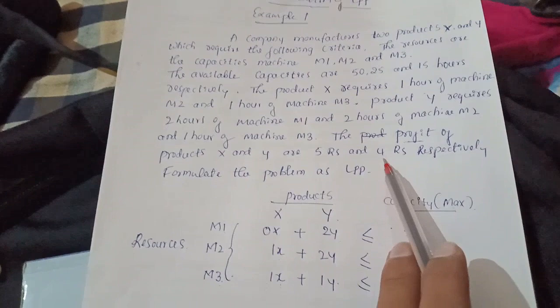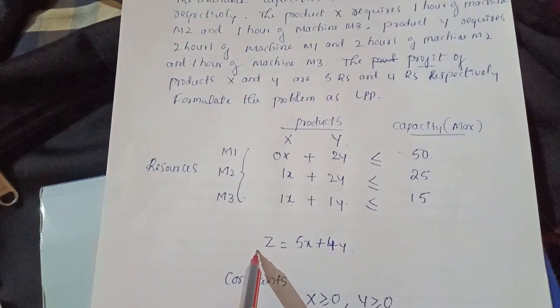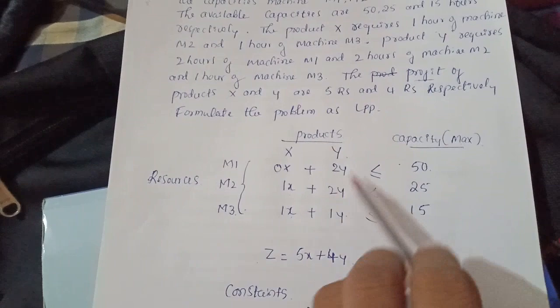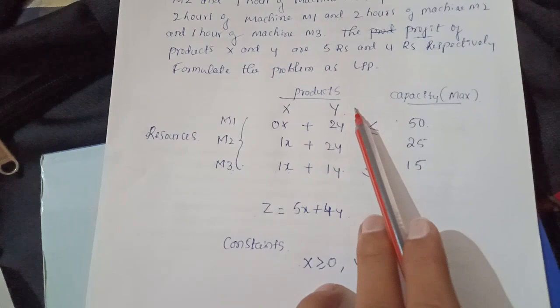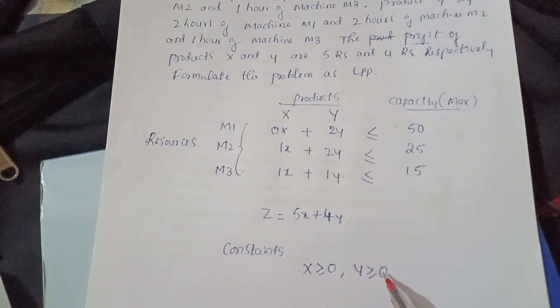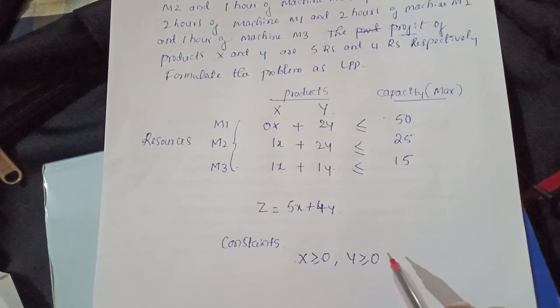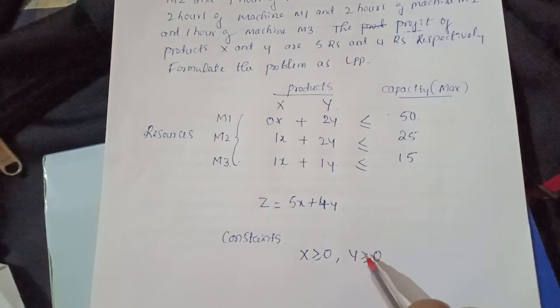The objective function Z is equal to 5x plus 4y. For the non-negativity constraints, x should be non-negative and y should be non-negative. Therefore, x should be greater than or equal to 0, and y should be greater than or equal to 0 — they should not be negative.